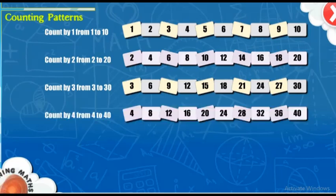30. Count by 4 from 4 to 40. 4, 8, 12, 16, 20, 24, 28, 32, 36.